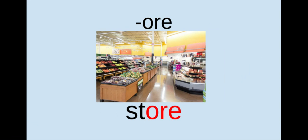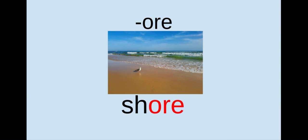Now we go on to -ore. This time the vowel goes at the end of the word, so the word is store, like a grocery store. So the -ore comes at the end: store. Here's a picture of a shore, like a seashore, and the -ore again goes at the end: shore.